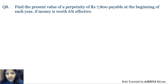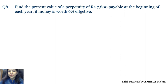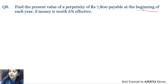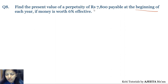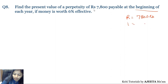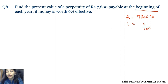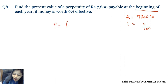Now let's move on to the next question: find the present value of perpetuity of rupees 7,800 at the beginning of each year if money is worth 6% effective. The important term here is 'beginning.' So R will be 7,800 rupees and I will be 6 upon 100. It is payable at the beginning of each year, so I is taken annually. For the beginning, the formula is P equals R plus R upon I, because you are paying the installment in the beginning.